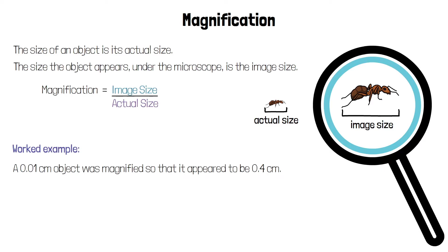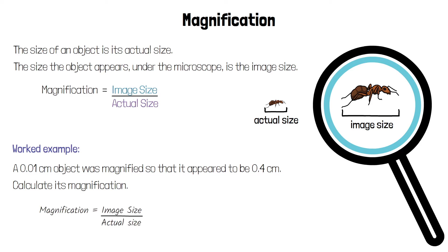For example, a 0.01 cm object was magnified so that it appeared to be 0.4 cm. Calculate its magnification. Magnification is equal to image size over actual size. The image size — the size the object appeared — was 0.4 cm, but its actual size was 0.01 cm. 0.4 over 0.01 gives you a magnification of 40 times.